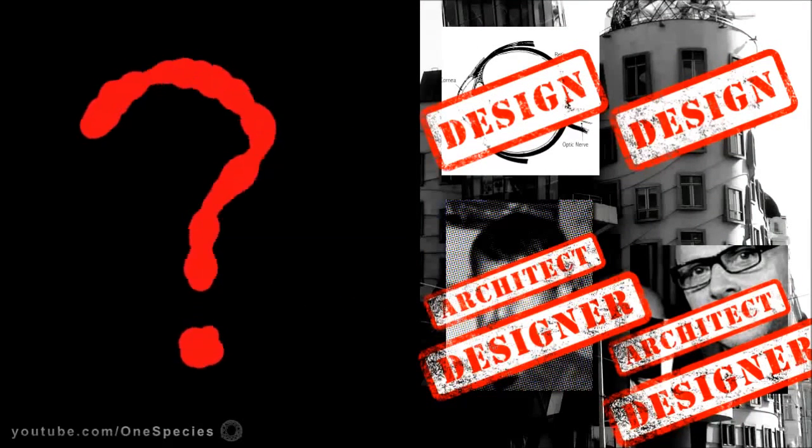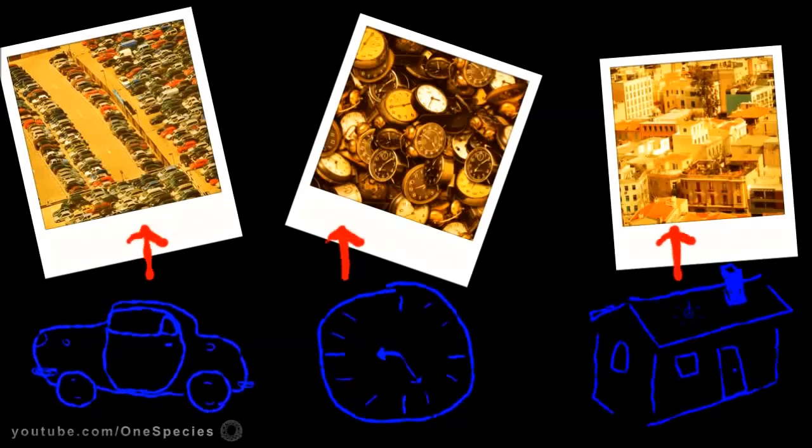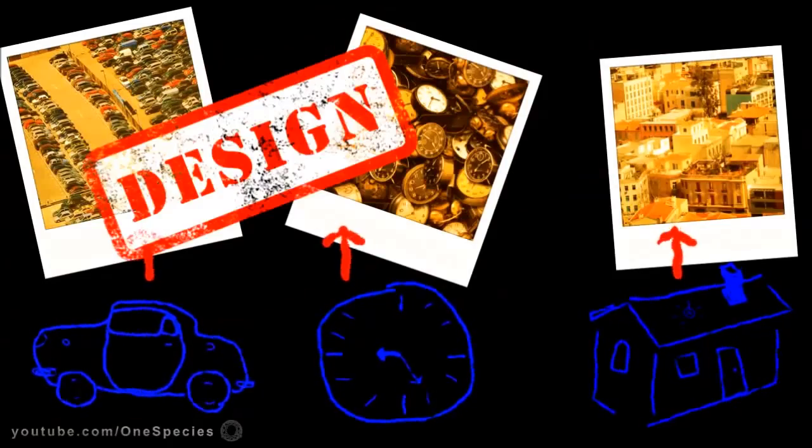Early on looking into intelligent design, we run into an assumption: the assumption that design is a somewhat fixed thing, that cars, watches, houses have a basic design behind them, and also the assumption that design requires a designer. Well, let's put that idea to the test.